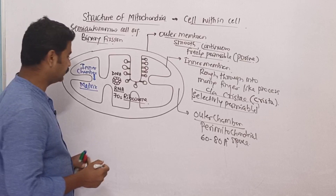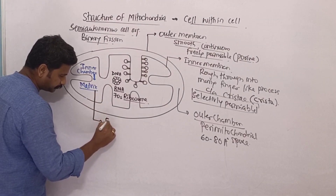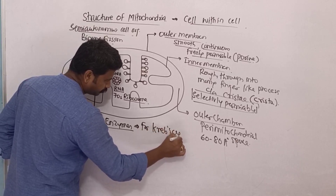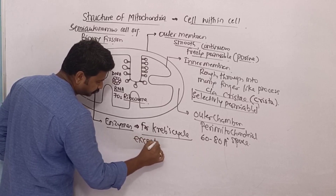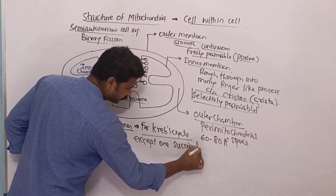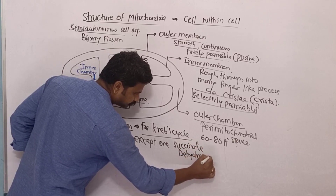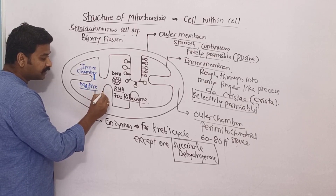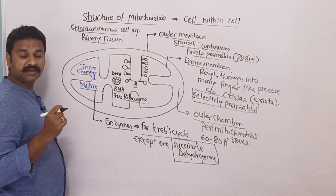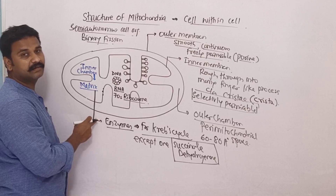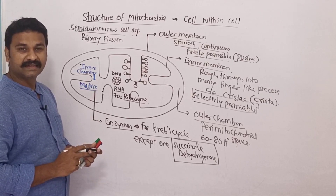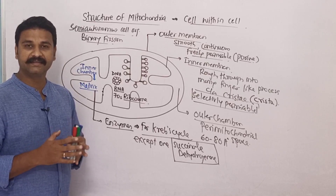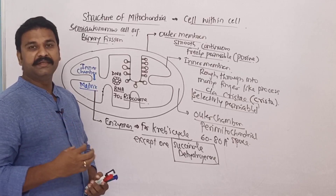The matrix contains all the necessary enzymes for the Krebs cycle, except one — succinate dehydrogenase. This enzyme is not present in the matrix; it is present on the inner mitochondrial membrane. All other enzymes needed for the Krebs cycle are present in the matrix. The mitochondrial matrix is very rich in enzymes — there are 70 different types of enzymes present, making mitochondria a very enzyme-rich site of the cell.